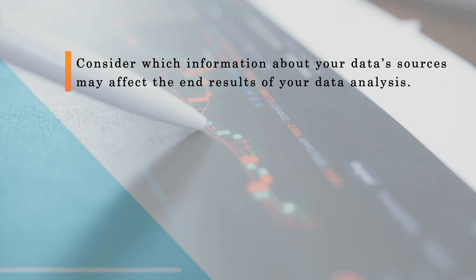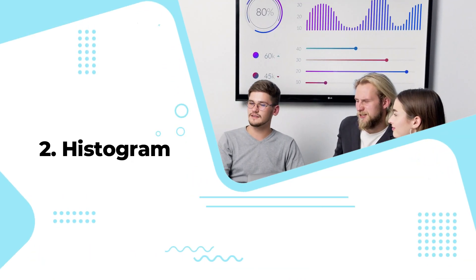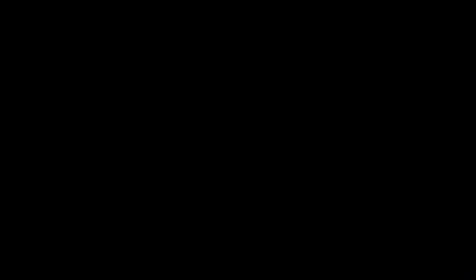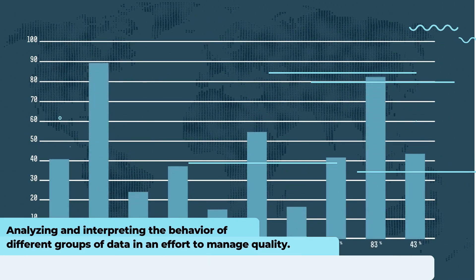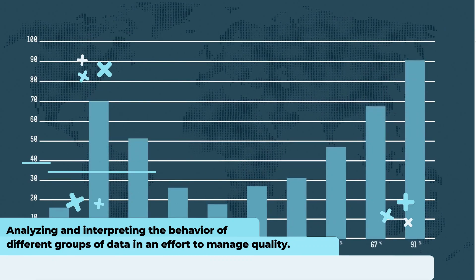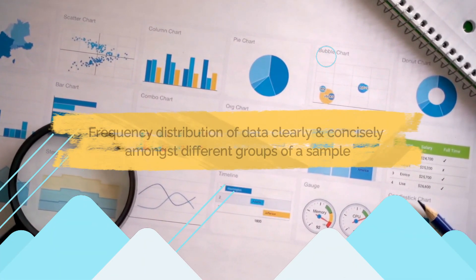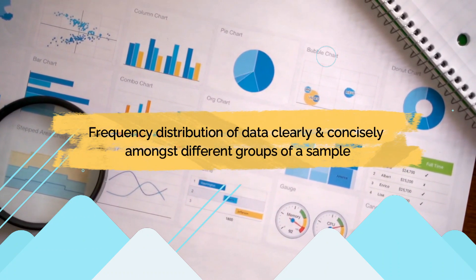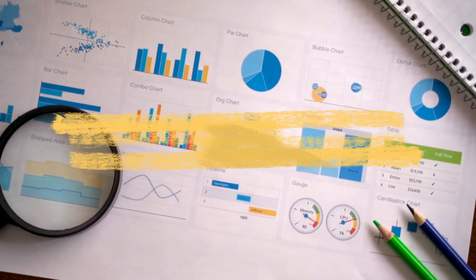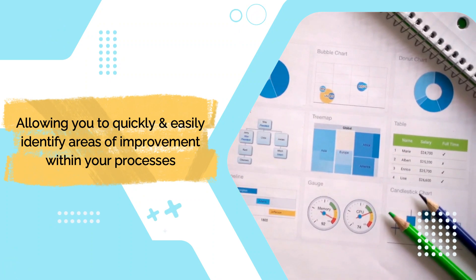To get the most out of the stratification process, consider which information about your data sources may affect the end results of your data analysis, and make sure to set up your data collection so that that information is included. Second is histogram: quality professionals are often tasked with analyzing and interpreting the behavior of different groups of data in an effort to manage quality, and this is where the histogram comes into play. The histogram represents frequency distribution of data clearly and concisely amongst different groups of a sample, allowing you to quickly and easily identify areas of improvement within your processes.